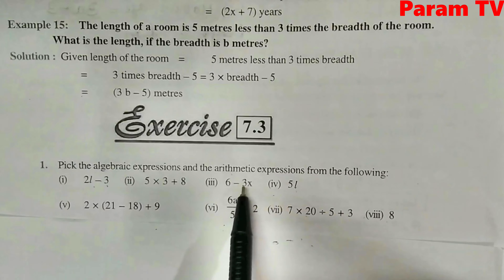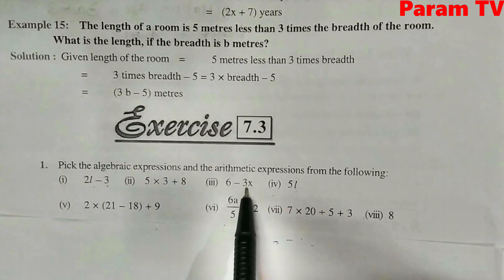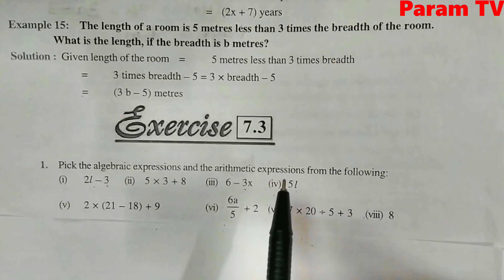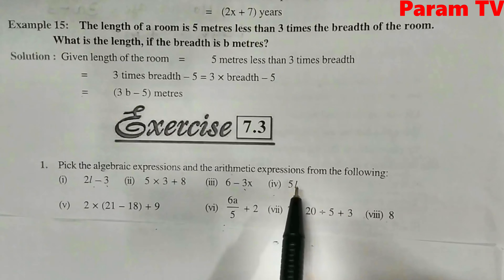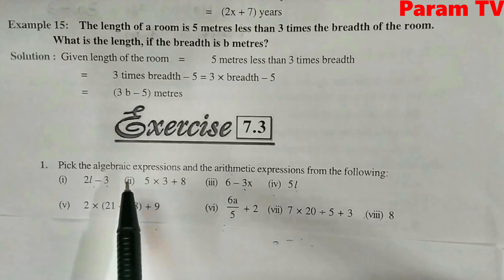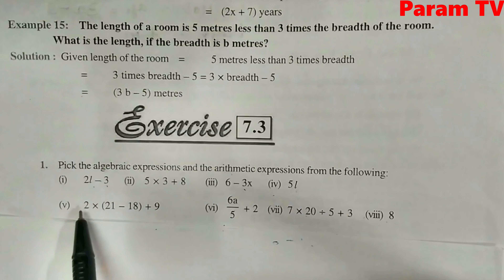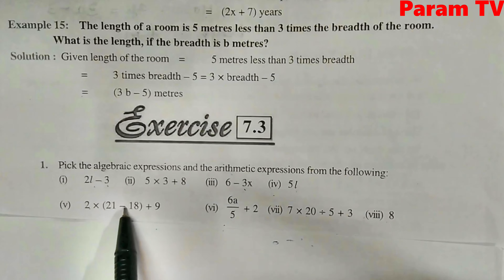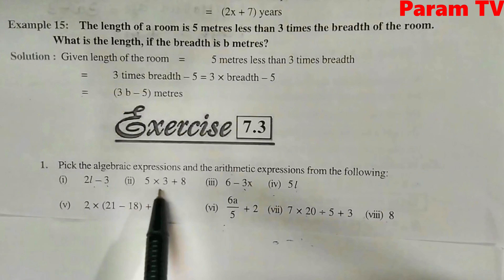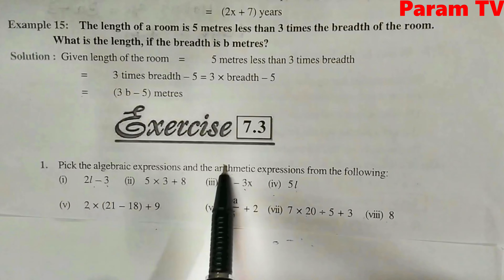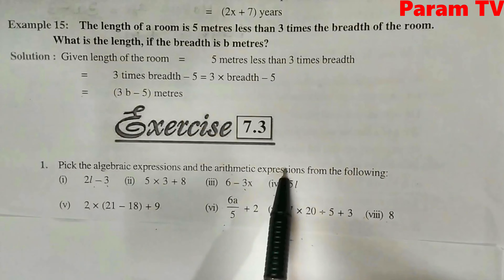Next is 6 minus 3X. This is an algebraic expression because it has X involved. Next is 5L — L is involved, so it is an algebraic expression. Next is 2 into 21 minus 18 plus 9 — only numbers are involved, so this is an arithmetic expression.